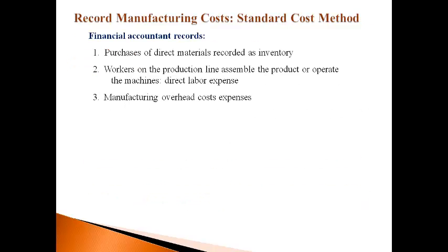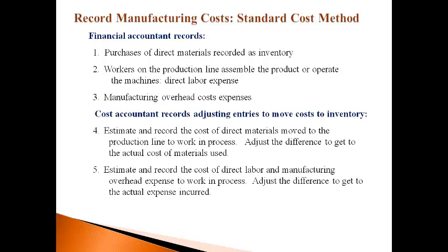The financial accountant records the purchases of direct material, the direct labor expense, and all manufacturing overhead expenses incurred during the period. Direct materials is recorded as inventory, and direct labor and manufacturing overhead are recorded as expenses. All product costs should be recorded as inventory until the inventory is sold to customers.